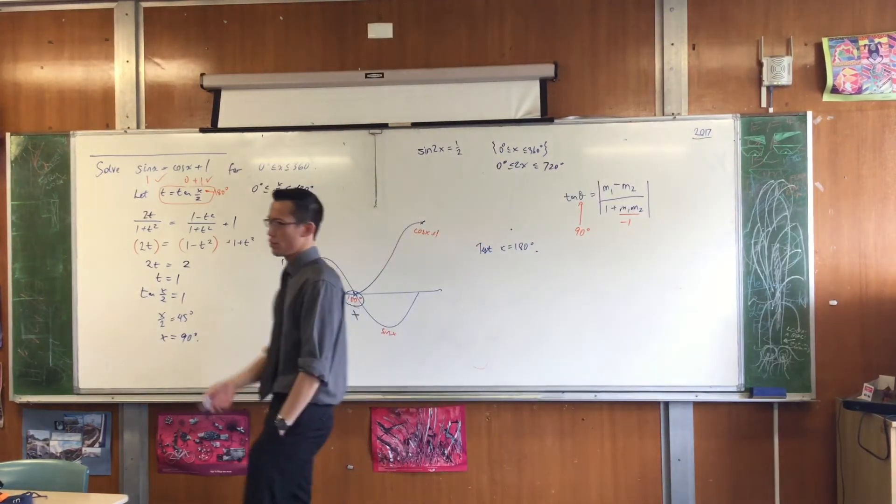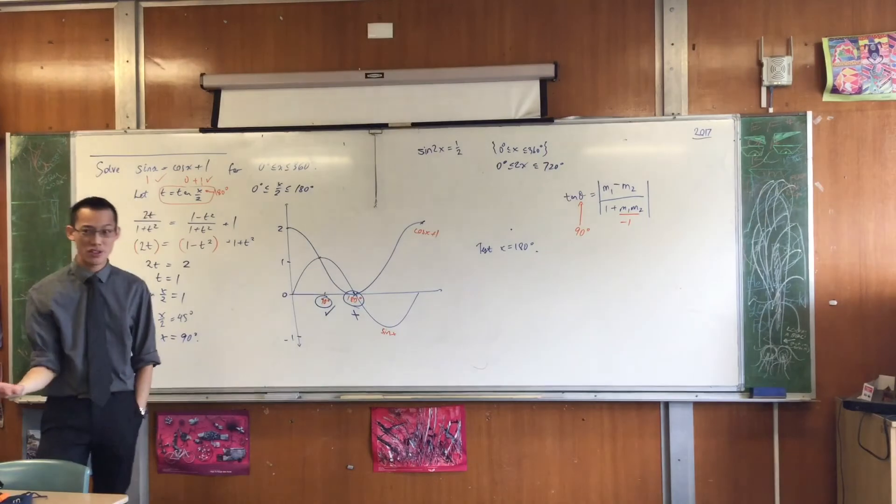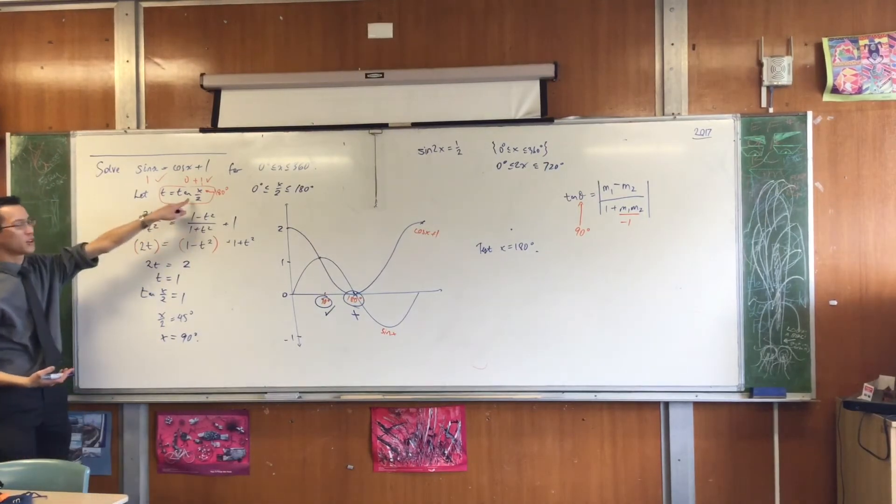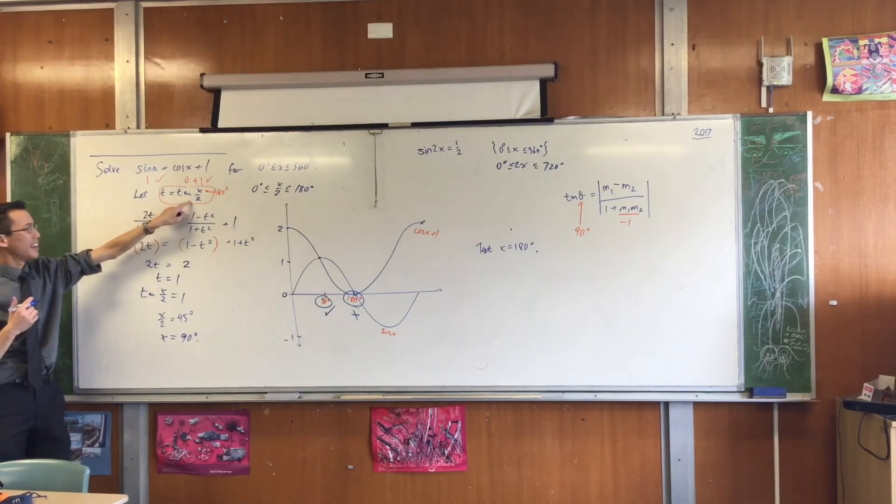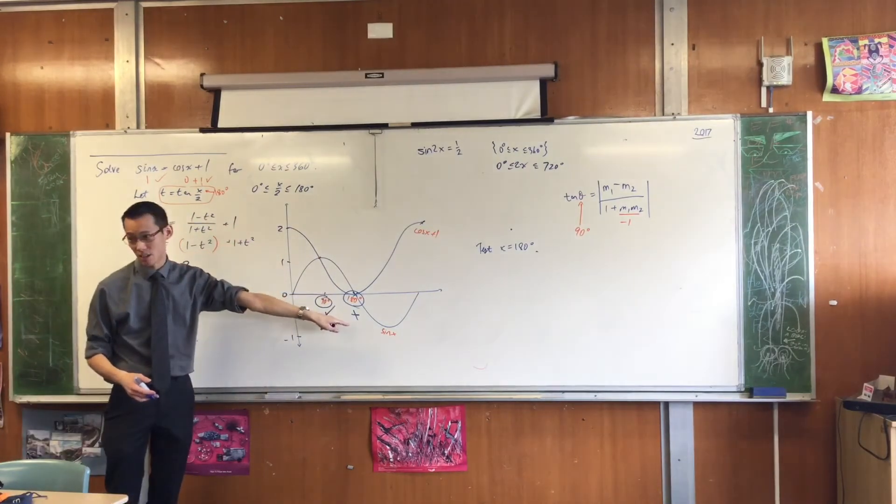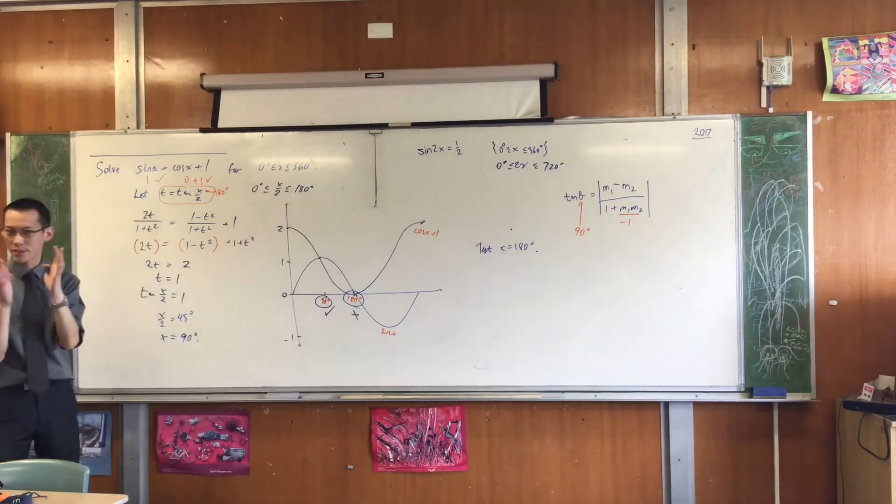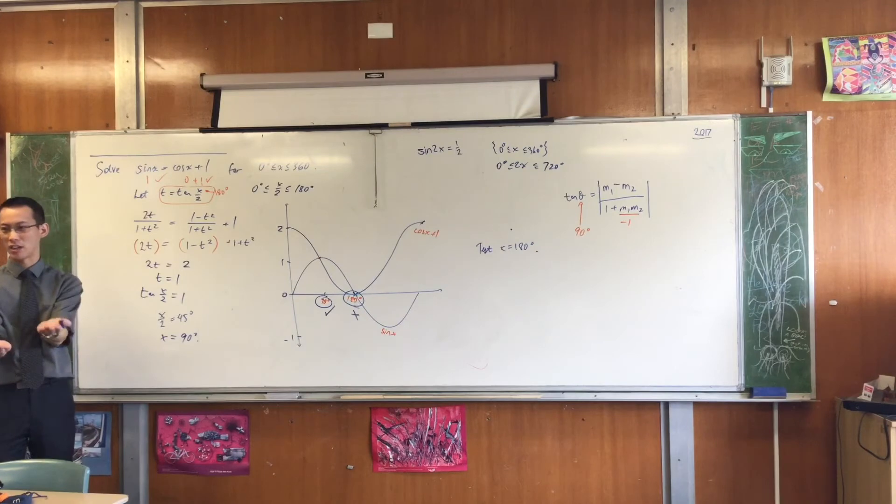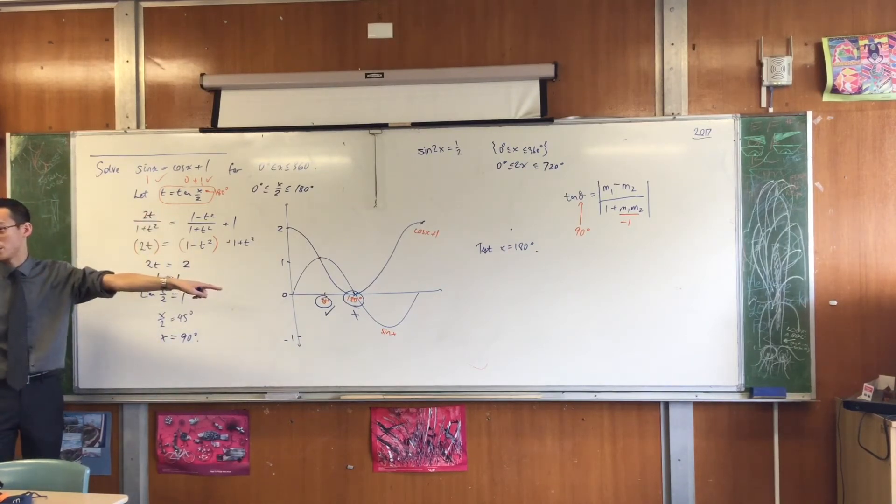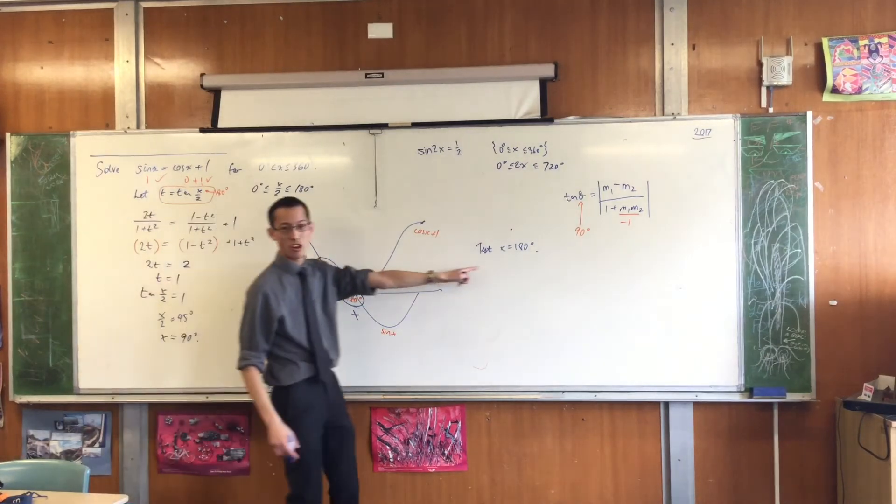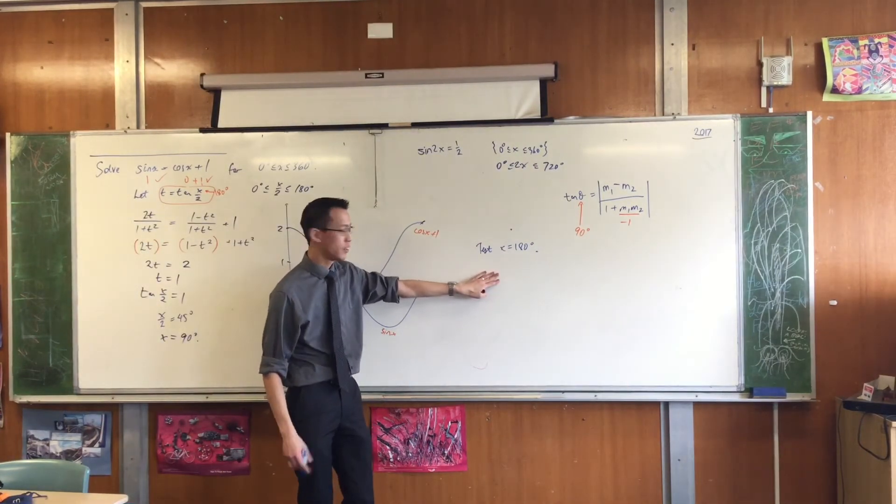You don't usually have to do this. You had to do it because you've introduced a method that, if you like, has a blind spot, right? This guy, this method, t-results, it can't see 180 degrees. It's a little bit like someone who's colorblind. You give them stuff that's red and green, they can't tell the difference. This guy can't recognize 180 degrees as a solution. So you are under an obligation to test it. Let's do it.